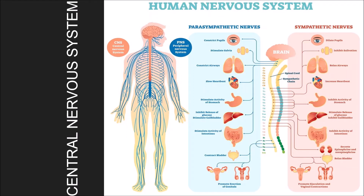Let us start with unit 3, the central nervous system. In the previous unit, we looked at neurons and how they communicate with each other. In this unit, we will look at the brain and the spinal cord, which are the parts of the central nervous system.